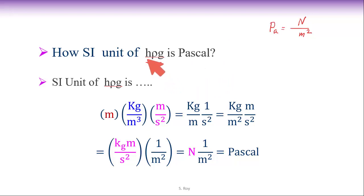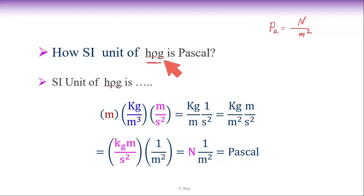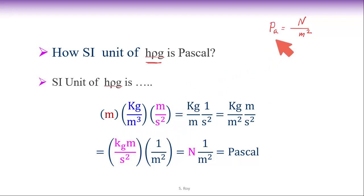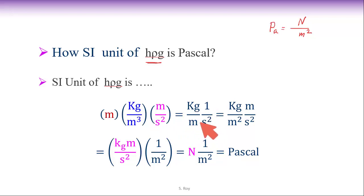To show how the unit of h·ρ·g will be Pascal: h is height — in SI system, unit is meter. Rho is density — in SI system, unit is kg per meter cubed. g is acceleration due to gravity — unit is meter per second squared. So combining these we need to find that the result comes out in Pascal. At the numerator we have m squared, at the denominator m cubed, so it simplifies to 1 per m, leaving kg per second squared.